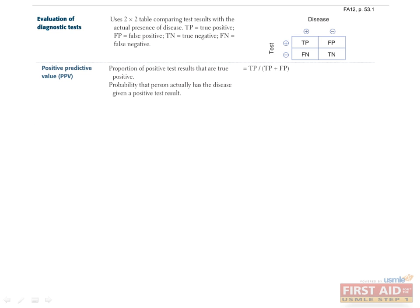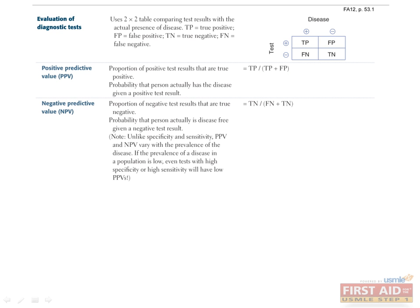The positive predictive value is defined as the proportion of positive test results that are true positives, or the true positives divided by the true positives plus the false positives. It is the probability that a person actually has a disease given a positive test result. So when a patient asks what are the chances they have the disease after receiving a positive test result, they are asking for the positive predictive value. The negative predictive value is defined as the proportion of negative test results that are true negatives, or the true negatives divided by the sum of false negatives and true negatives. It is the probability that a person actually is disease free given a negative test result.